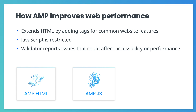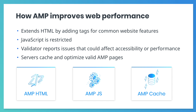Third, the AMP validator points out issues that affect site accessibility and performance, making it easier to resolve them. And fourth, one of the greatest benefits of AMP is that AMP pages are cached. Companies like Google and Microsoft have created caches that will store valid AMP pages. These caches apply powerful performance optimizations to site content. And cached AMP pages are integrated with search engines, so your site can be accessed from search results in a couple of seconds or even less.